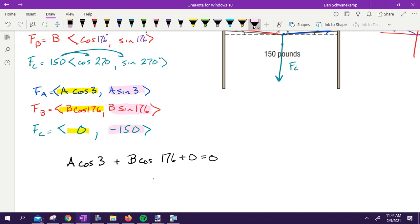Zero. So if I take all the up and down forces, that's those three things. So A sine of three plus B sine of 176 minus 150, that's all going to be equal to zero. All of those things are going to get me zero because he's not moving up and down either.